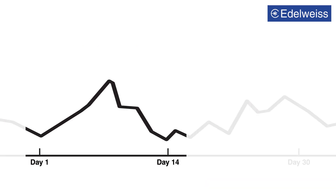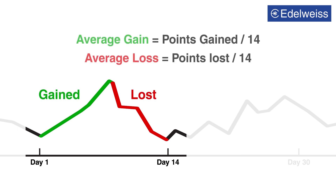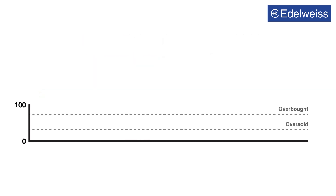Let us assume that the stock has moved upward for 8 days and downward for 6 of these 14 days. The points gained and points lost will be divided by 14 to arrive at average gain and loss respectively. The value of RSI oscillates between 0 and 100.